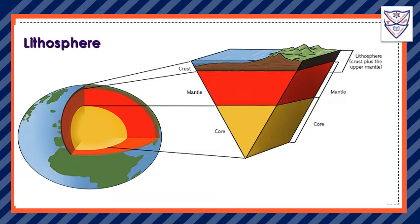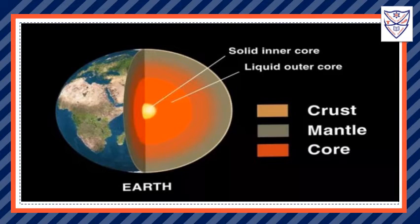Below the lithosphere or crust, we have two more layers called the mantle and core. The mantle is the middle layer, which is thicker than the crust but thinner than the core. As we go deeper into the earth, it gets hotter and the pressure increases. The core has two parts: outer core and inner core. The outer core is liquid and the inner core is solid. All the natural resources of the earth are found on the lithosphere, which makes it important.